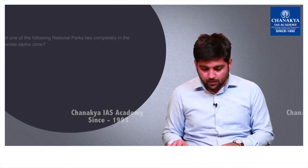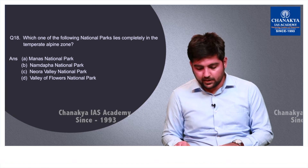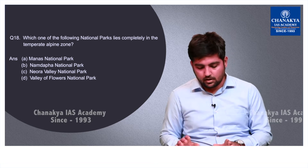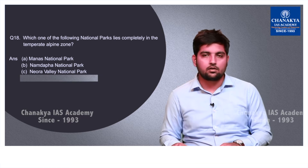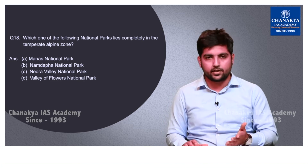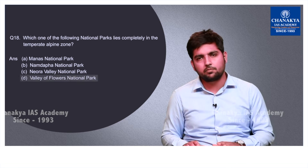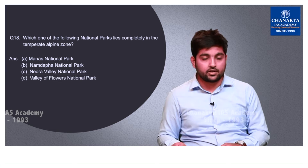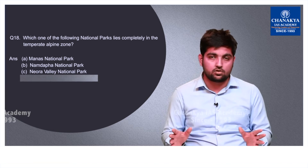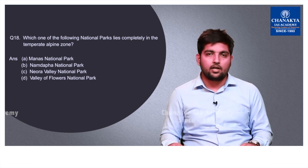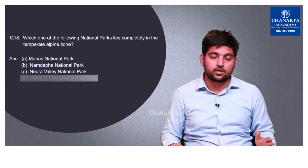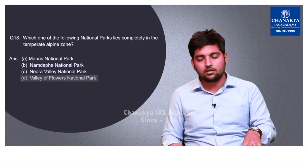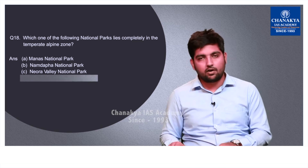Question number 18 asks which of the following national parks lies completely in the temperate alpine zone. The correct option is D — Valley of Flowers National Park — because it is located at an altitude above 2500 meters and completely falls in the alpine region. Namdapha National Park also has altitudes above 4000 meters, but since its entire area is not in the alpine region, the correct option remains D.